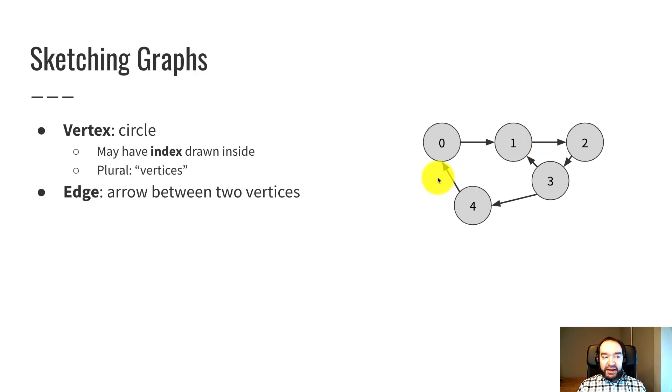Here's how we sketch a graph. Each vertex is drawn as a circle, and there's a strong convention that we number the vertices the same way that we number array indices. So starting from 0, 0, 1, 2, 3, 4 in this example.